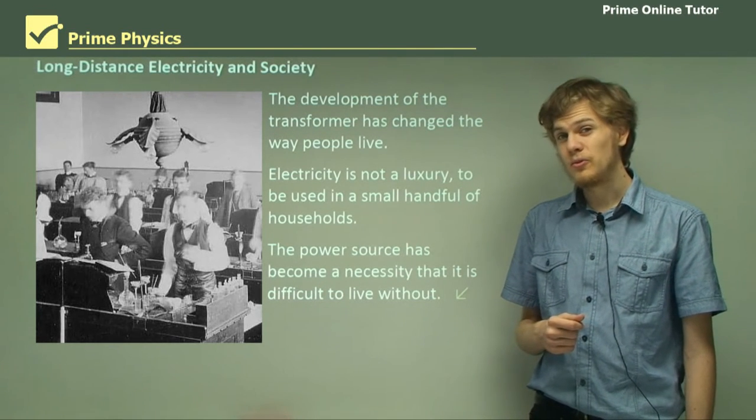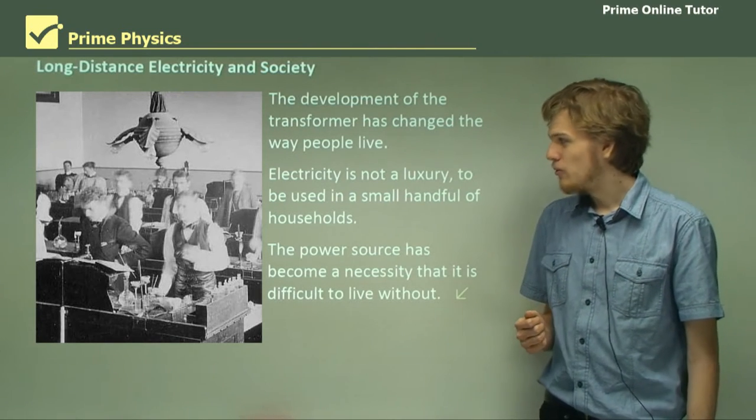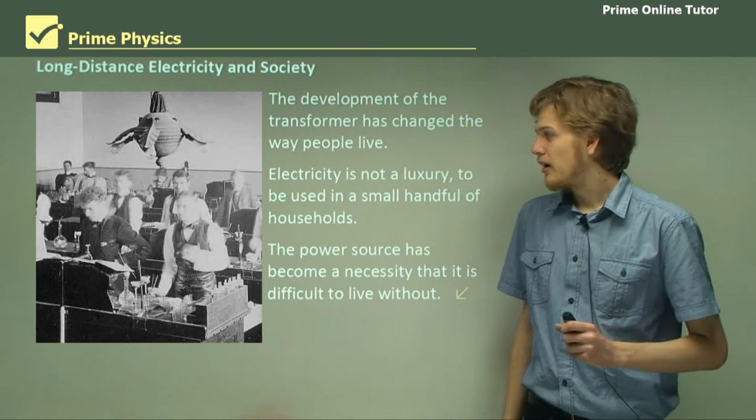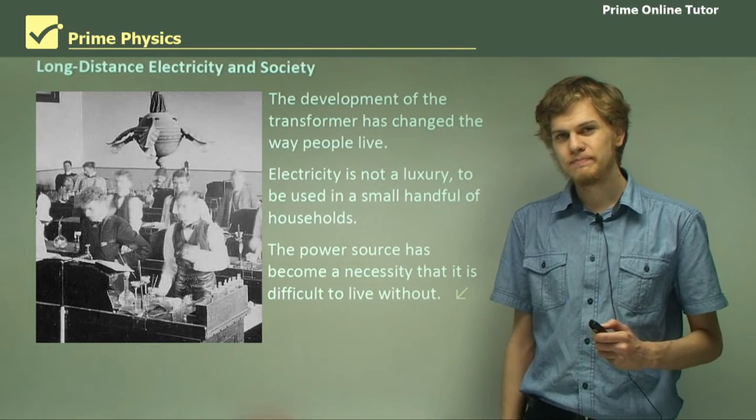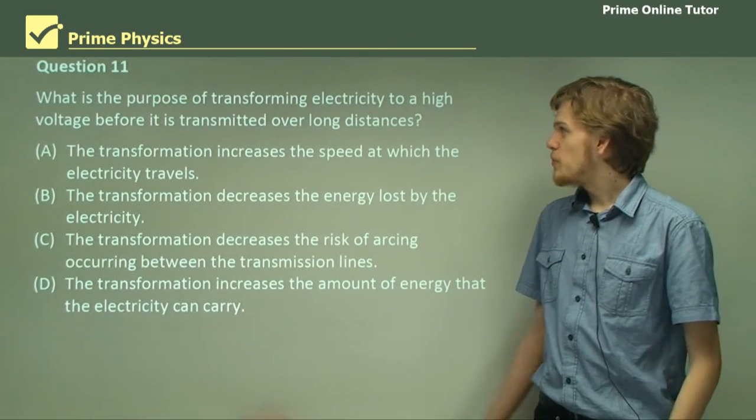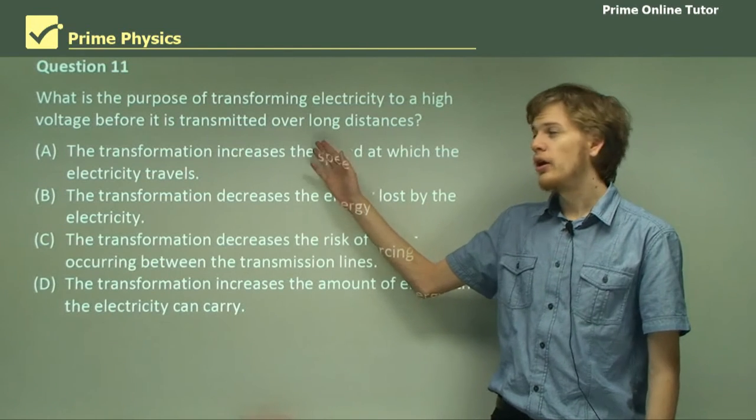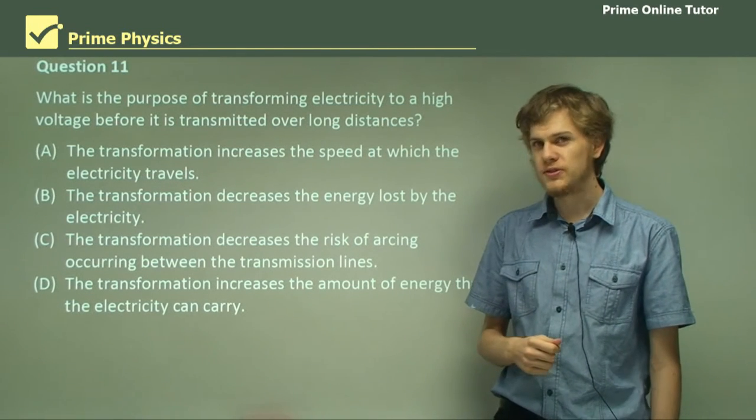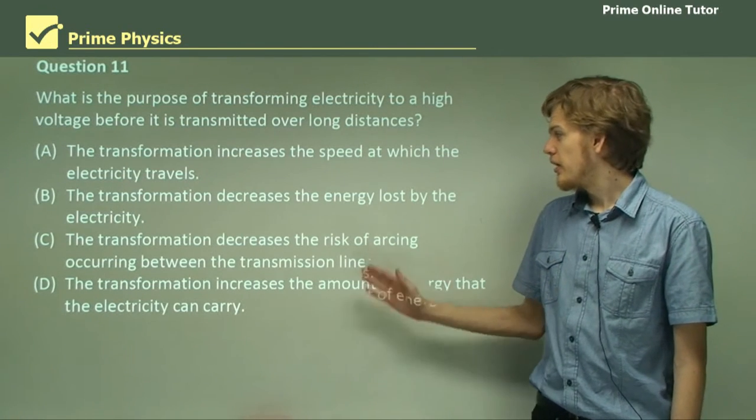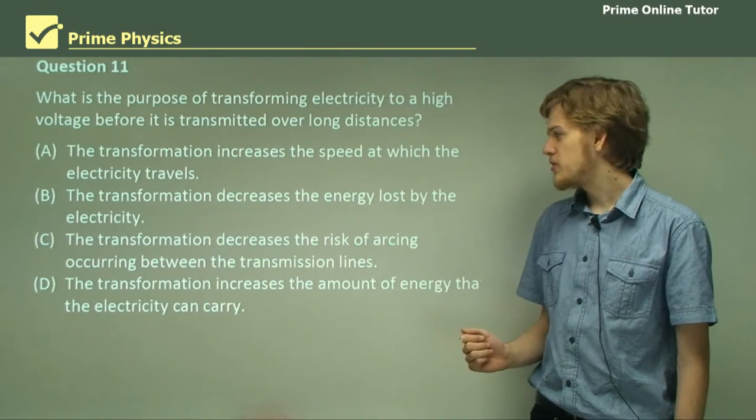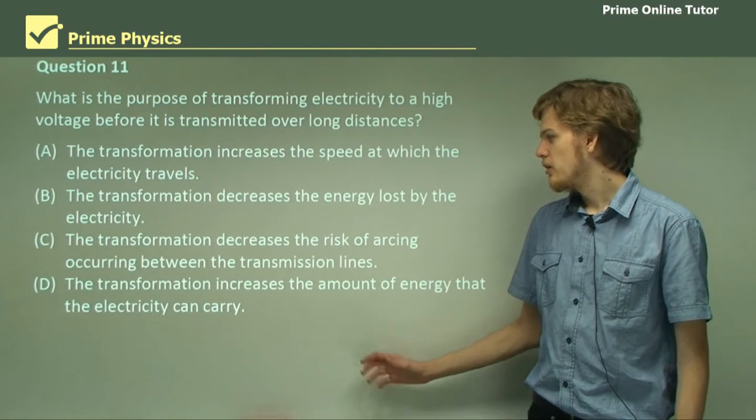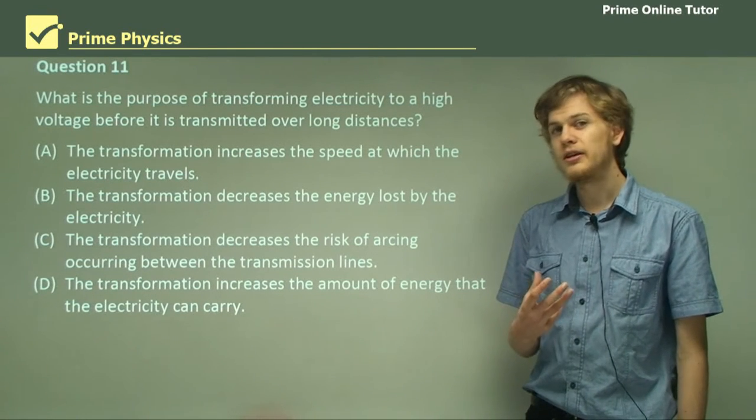So this is the end of the theory. We've learned a bit about transformers and how they've changed society. So let's go on to some questions to test your knowledge. Question 11. What is the purpose of transforming electricity to a high voltage before it is transmitted over long distances? Does it increase the speed of the electricity? Decrease the energy lost by the electricity? Decrease the risk of arcing between the electric wires? Or does it increase the amount of energy that the electricity can carry?